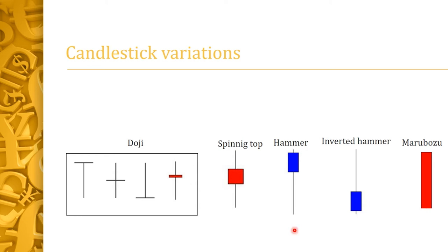The next candle is the spinning top. It's called that because it looks like a spinning top. The wicks for the spinning top are almost equal on both sides — they may vary a little but are almost equal. They usually have a very small body. Depending on where you see them in the chart, they can show indecision in the market. They are not as strong a signal as the candles we looked at before or as the marubozu, which we'll talk about next.